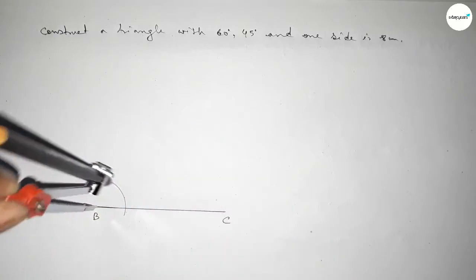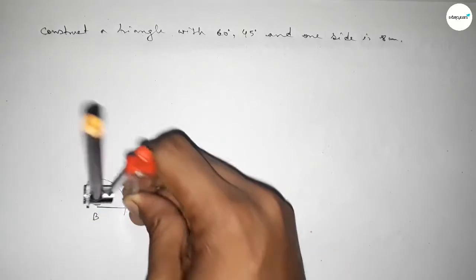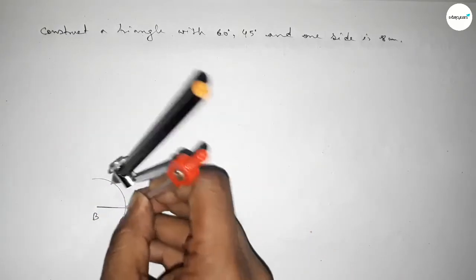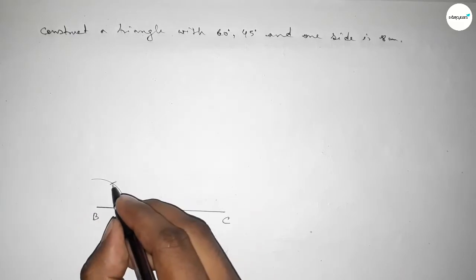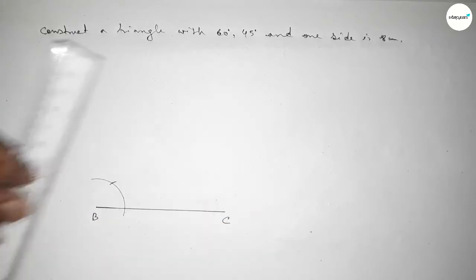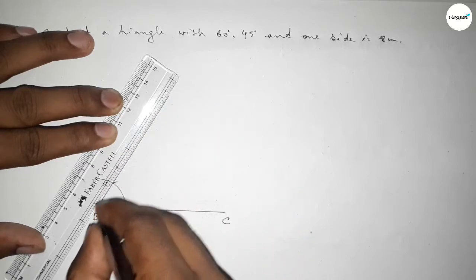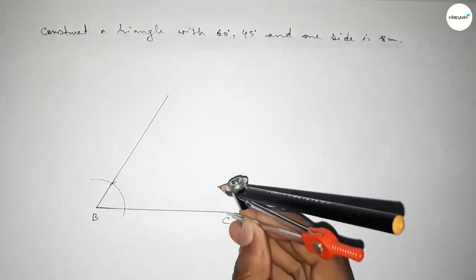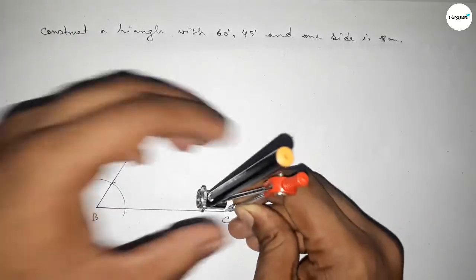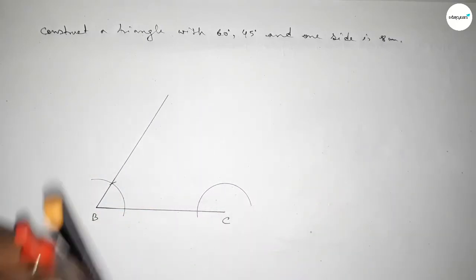Putting the compass here with the same length and cutting here, so both the curves intersect at a point. Now joining this to get a 60 degree angle. Now drawing a 45 degree angle at point C, so putting the compass here and drawing an arc.